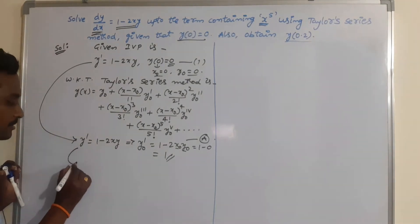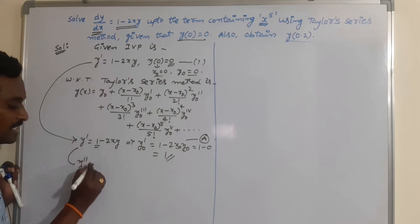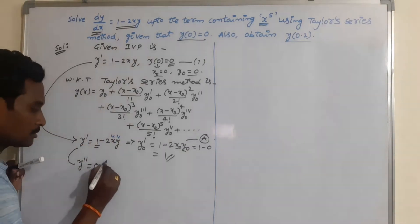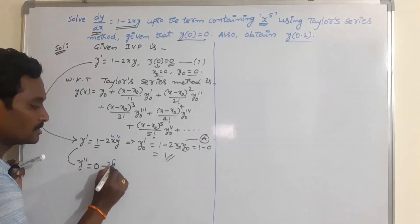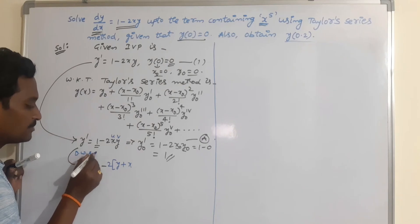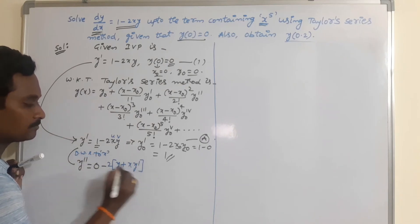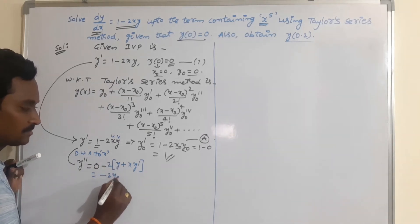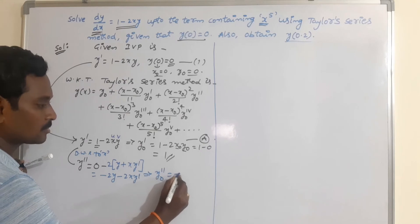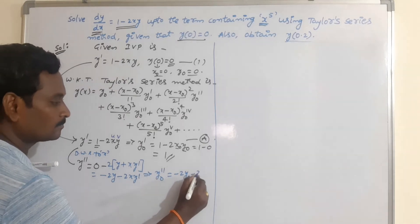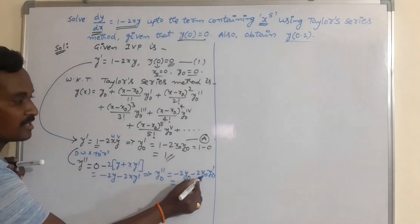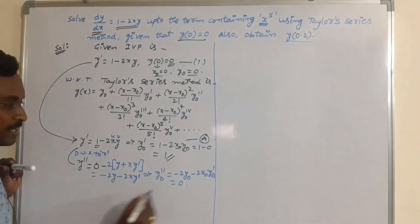Now take another derivative of y'. We get y'' = 0 (derivative of 1) minus 2 times, applying the product rule to x and y: derivative of x is 1, so we get minus 2y minus 2xy'. Now write the expression of y₀'': it is minus 2y₀ minus 2x₀y₀'. Since y₀ = 0 and x₀ = 0, we get 0 minus 0 = 0. So y₀'' = 0.